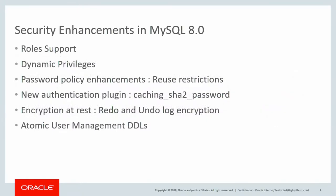To quickly go over the features that we introduced in 8.0 as far as security is concerned: we added role support, which was a long pending feature asked by many community members. We added dynamic privileges to help extend plugins to use the privilege system. We made our password policy announcements and added reuse restrictions, completing the story we started in 5.6. We also added a new authentication plugin called Caching SHA-2 Password for improved security, extended encryption at rest to cover redo and undo log encryption, and made user management DDLs atomic.